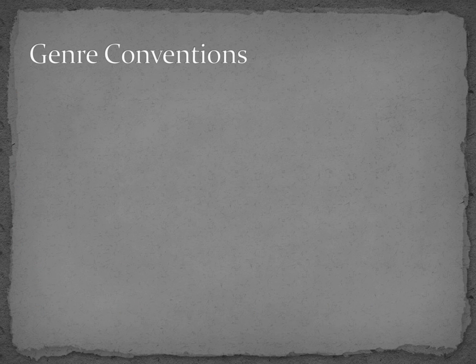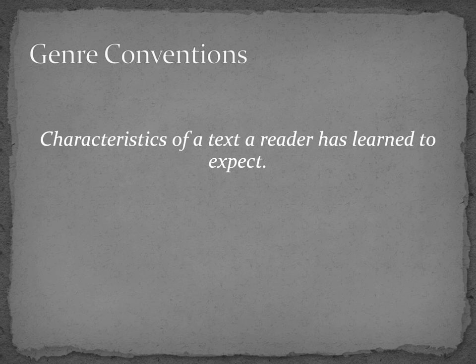We've just covered the three rhetorical appeals. Another set of features with which you should familiarize yourselves are genre conventions. Your book discusses this, but I'll take some time to explain it a bit more. We've already talked about how we define genre as categories of writing. So genre conventions refer to the characteristics of a text a reader has learned to expect for that particular genre. You might ask, what do you mean by the features a reader expects? Like rules? Well, sort of.